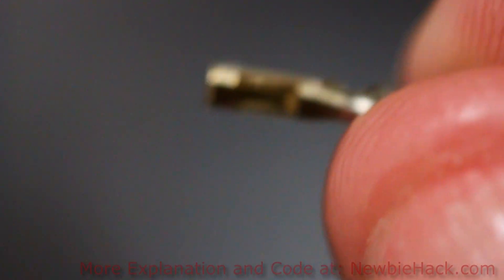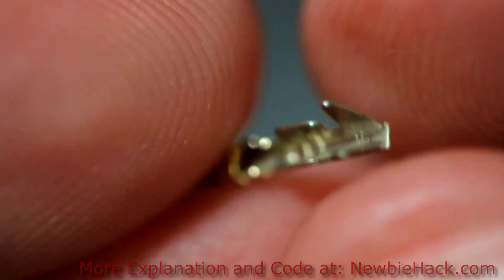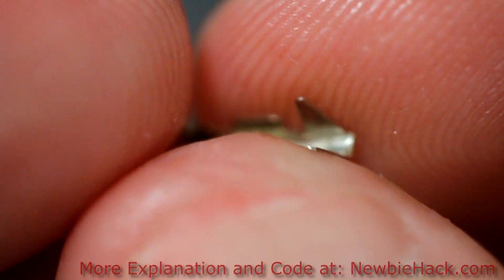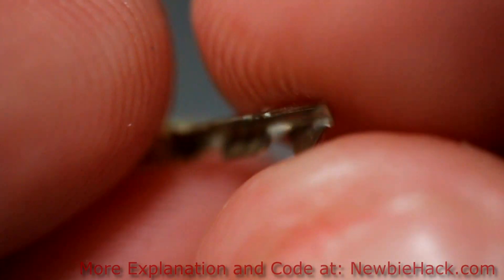A crimp pin for these headers looks like this. It is squarish at the tip and has a few flaps on the back to hold the wire. There are special tools that are used to crimp these flaps around the wire and the wire insulation.